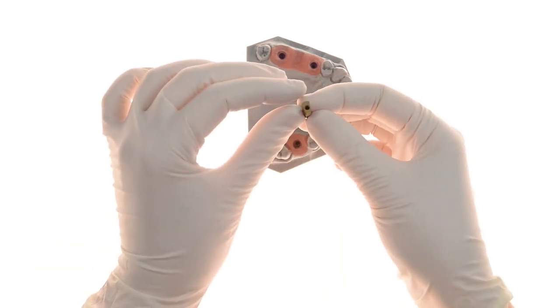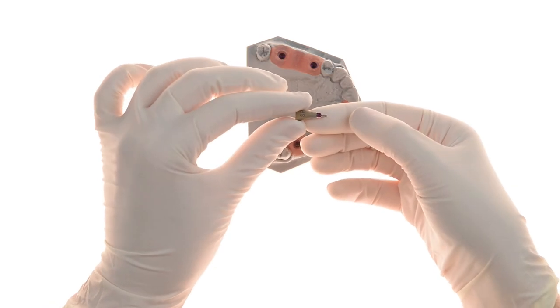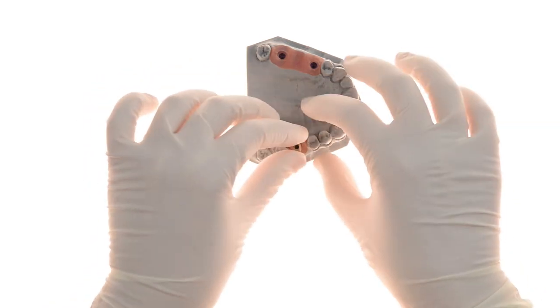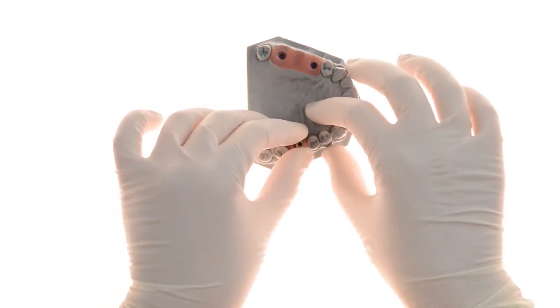This is the unique MIS scan post used with the EasyBase. It is placed with its narrower side facing the direction of the angulated screw channel.